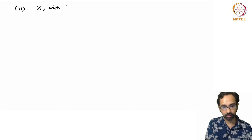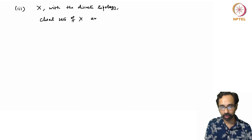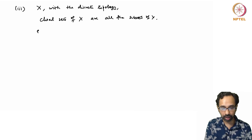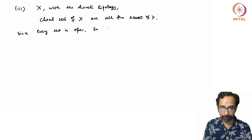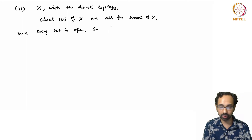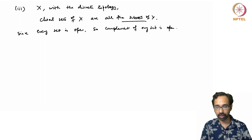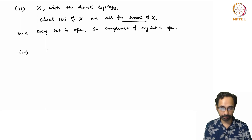Let us consider X with the discrete topology, where X is an arbitrary set. The closed sets of X are all the subsets of X. This is because in the discrete topology every subset of X is open, so the complement of any set is also open, making every subset closed.